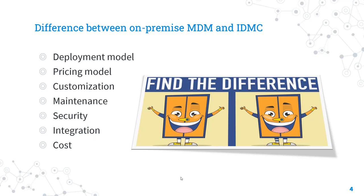The next factor is integration. On-premise Informatica MDM has more robust integration capabilities compared to IDMC, because customers can customize the solution to integrate with other on-premise systems. IDMC has more limitations in this regard — integrating multiple systems can be more challenging. Cost is also a factor: on-premise MDM requires a large upfront investment in hardware and software, which is not needed for the cloud version.